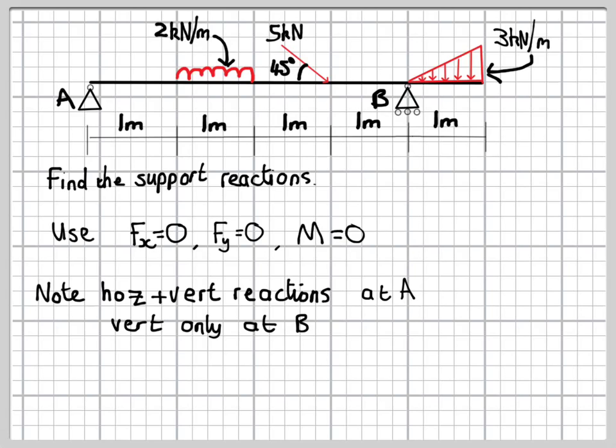So that has a horizontal reaction and a vertical reaction. And then B on the right hand side is a roller, so that will just have a vertical reaction, there's no horizontal force at B.